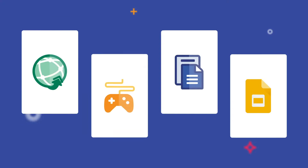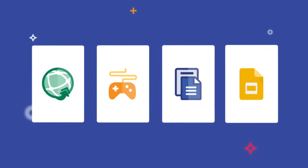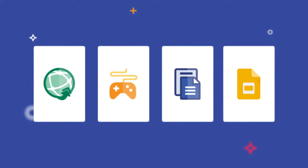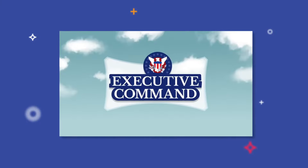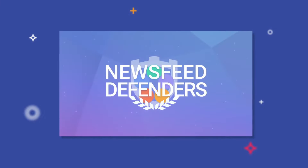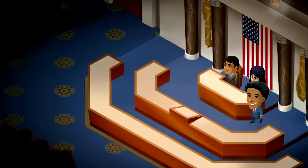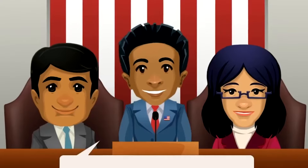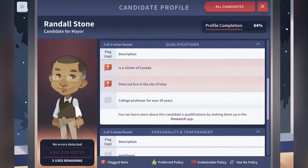iCivics Election HQ teaching resources can be split into four categories. Let's take a look at them. First up, games: Executive Command, Cast Your Vote, Newsfeed Defenders, and Win the White House. These titles invite students to step into the office of president, research local candidates, evaluate media sources, or run a presidential campaign.